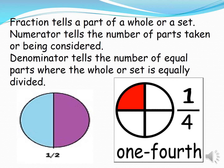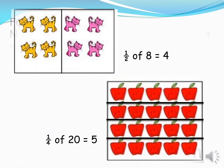Here are examples of fractions. The first figure: a circle divided into two equal groups. So each group is one half. Second example: we have a circle divided into four equal parts. One part is one fourth. Example number three: we have a set of animals divided into two groups. So that is one half.